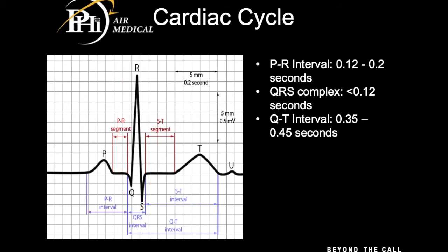The last thing we look at is the QT interval — that's the heart's ability to fully depolarize, fully squeeze and get maximum ejection, and then fully repolarize. It should occur in less than 0.45 seconds. If you have a longer QT interval, meaning it's taking longer for that heart to repolarize, there are going to be some medications that are contraindicated in this patient.